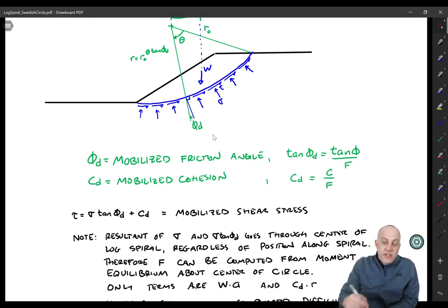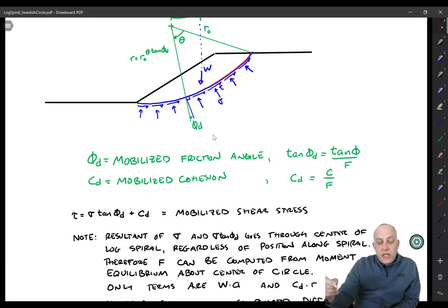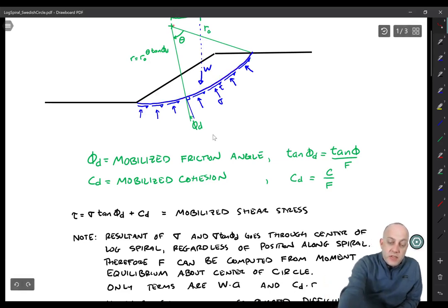So what we're left with is a calculation of just figuring out the resisting moment contributed by c sub d over that arc length. So the way we would do that is to integrate up c sub d times this distance r and we would integrate it over that arc length and that would give us the resisting moment.